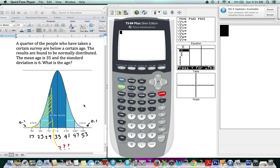A quarter of the people who have taken a certain survey are below a certain age, and the mean is 35 here, and the standard deviation is 6. So we did what we would always do, starting off by labeling our diagram 35 in the middle, and we counted up by 6, and then we counted back by 6. So we got all these numbers on our x-axis.